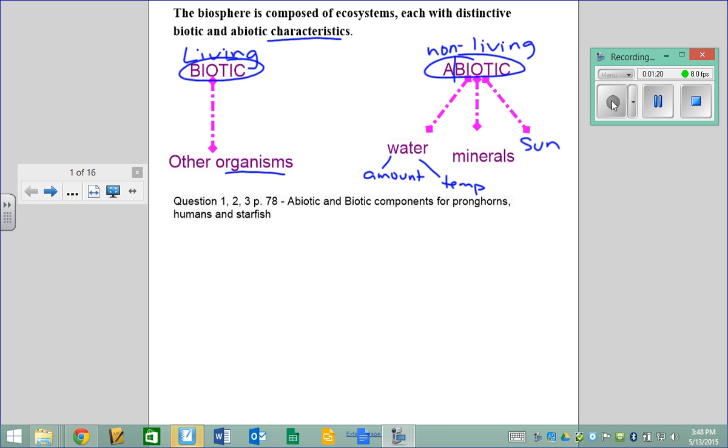The first thing I'd like for us to do is take a look at a question from your textbook on page 78. The question asks you to think of some biotic and abiotic components in the ecosystem of a pronghorn, a human, and a starfish. I'm suggesting you make a little chart. If you don't know what a pronghorn is, check page 78. Take a few minutes and see if you can list characteristics or components that are biotic and abiotic for each organism.